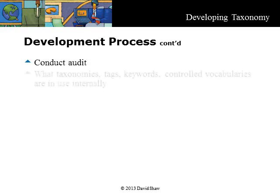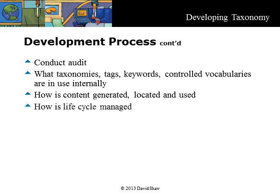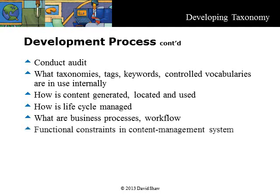The next step in developing the taxonomy is to conduct an audit to determine which taxonomies, tags, keywords, and controlled vocabularies are already in use internally. During the audit, determine how content is generated and do an inventory of where it is located and used. Find out how the lifecycle of the content is managed and what the business processes and workflow are. Don't just ask — have people walk you through the process. Also include any known functional constraints in any planned application or system for managing content.